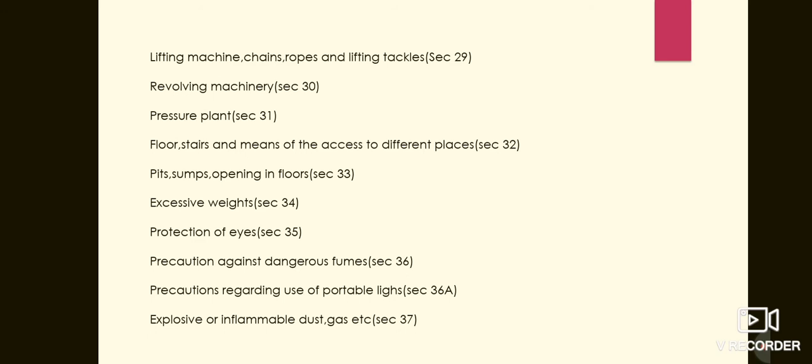Pressure plant is mentioned in session 31. If any part of the plant or machinery is operated at a pressure above atmospheric pressure, effective measures are to be taken to ensure safe working pressure. We can reduce the pressure, reduce the air flow, and address other dangerous issues. Effective measures should be taken to ensure safe working conditions.